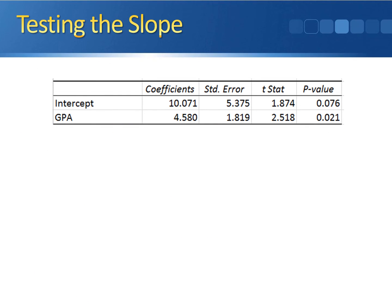So to formally test whether or not the slope is significantly different from zero, we're going to follow the same five-step process. The nice thing about doing hypothesis tests on regression is that the output provides a lot of the information for us.